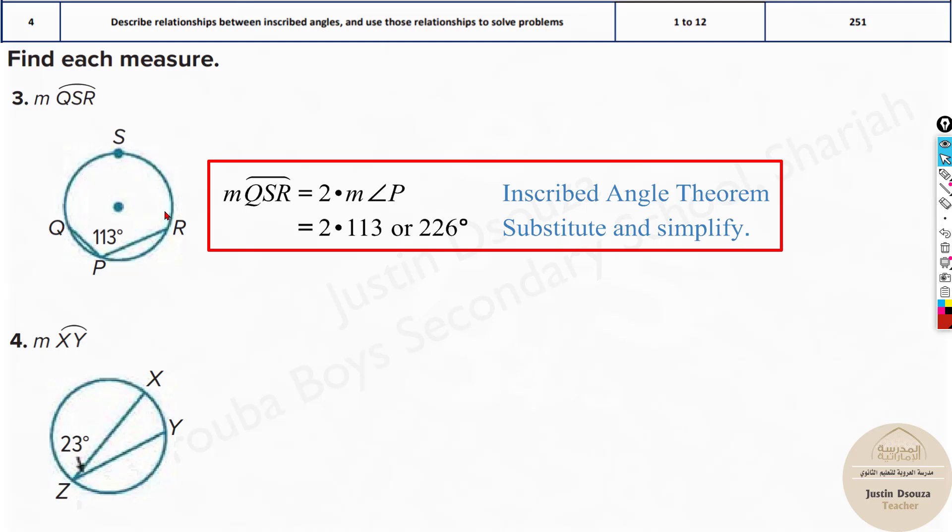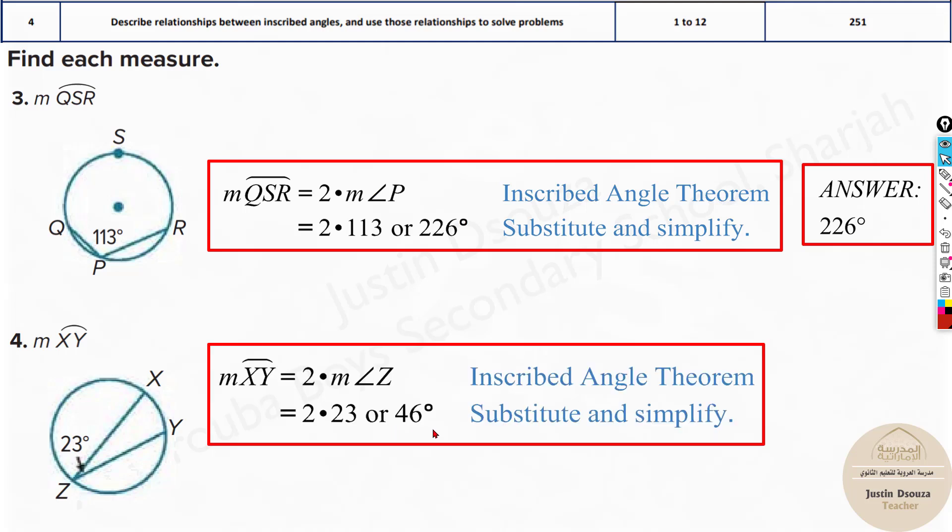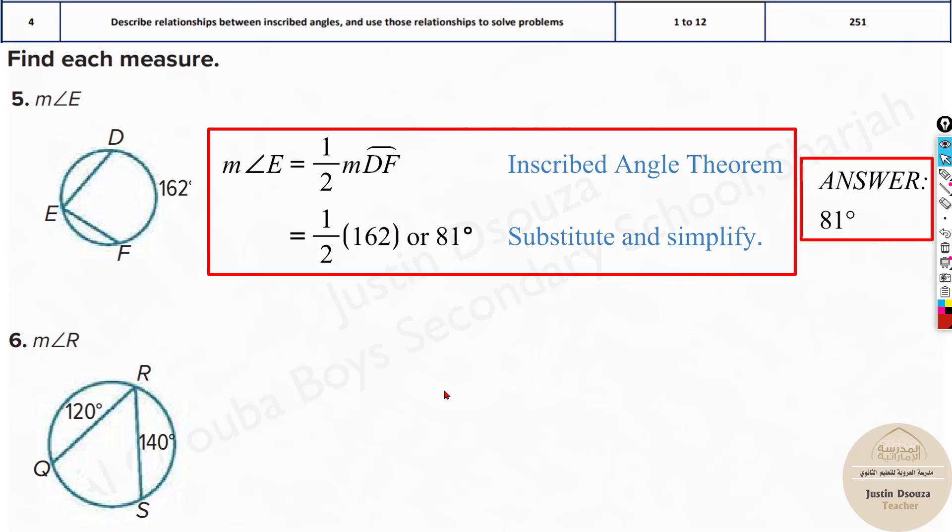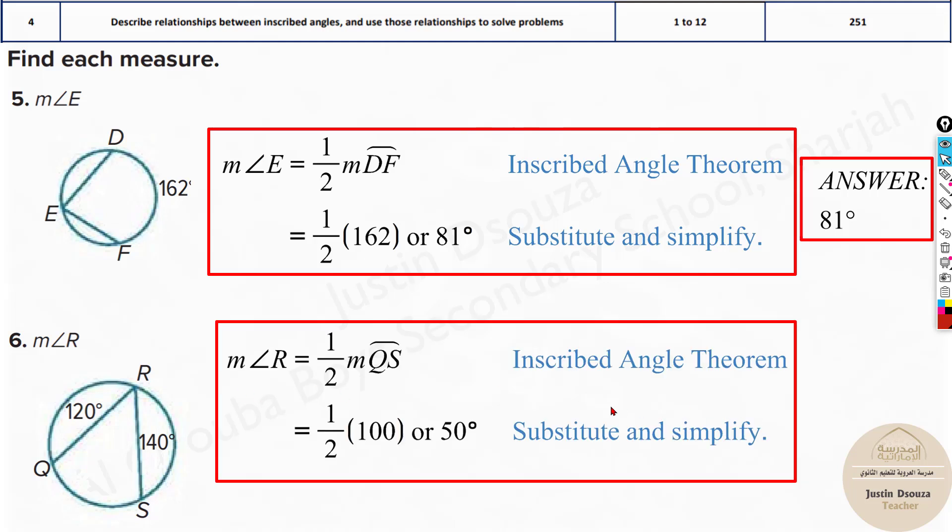Over here also it's the same thing. Angle QSR will be 2 times 113 degrees. And this is 23. So this will be 2 times 23. 46 would be the answer. Try these by yourselves and then check for the answers. Everything is solved up over here.